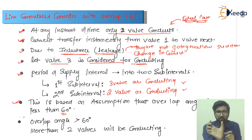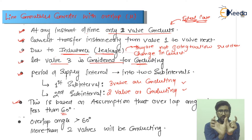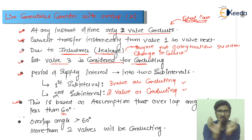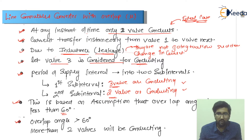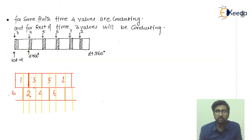To understand overlapping: suppose valve one is conducting for some time — ideally valve three should only start after valve one completes, but due to inductance valve one operates longer than intended, so valve three starts before valve one finishes. This overlap period exists when the overlap angle is less than 60 degrees. When the overlap angle is greater than 60 degrees, more than two valves will be conducting.